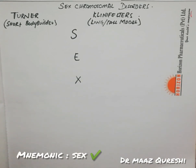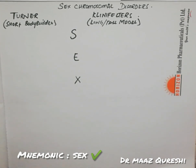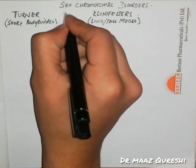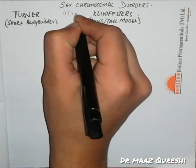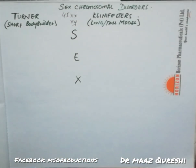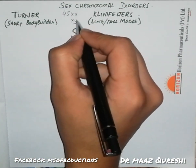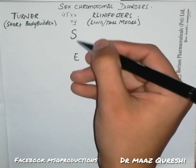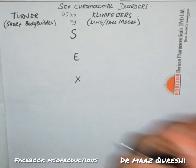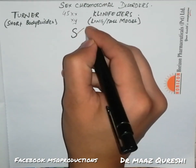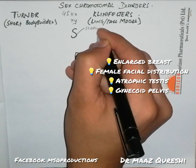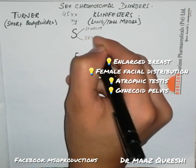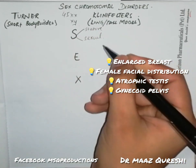It's really important for gynae and surgery, plus those who are doing MRCP, MLE, and FCPS in different fields. Apart from these two syndromes, there are many MCQs that can come from related topics, so we'll talk about those too. Normally you have 46 chromosomes — 46XX for female and 46XY for male.